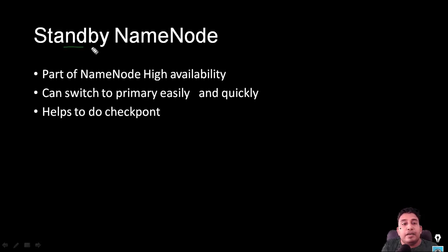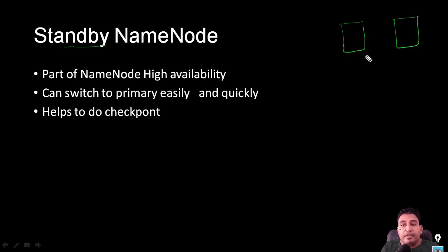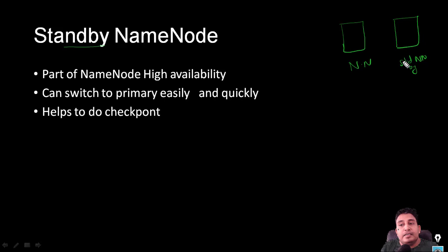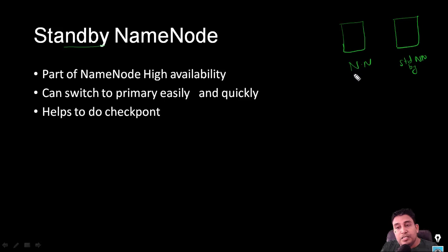Now we will see what is standby name node. Standby name node is part of name node high availability. If you enable high availability, you will have an active name node and a standby name node. It can easily switch to become the active name node either manually or automatically, without much delay.